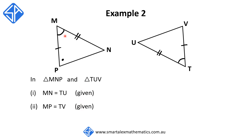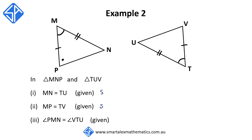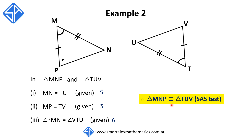We can also see that in these two triangles, we have two angles that are the same. We write: angle PMN is equal to angle VTU, and because it's marked, the reason is given. So what we have is a side, another side, and an angle — and this angle is the included angle between the two sides. Therefore, triangle MNP is congruent to triangle TUV, using the SAS test.